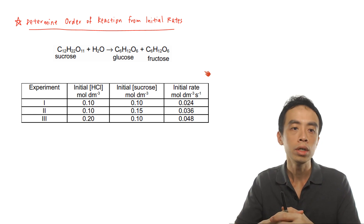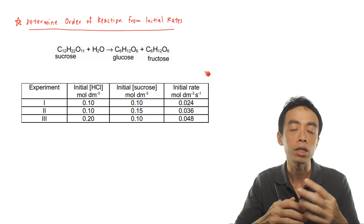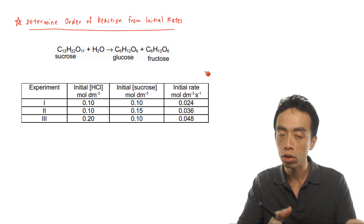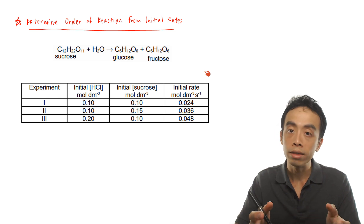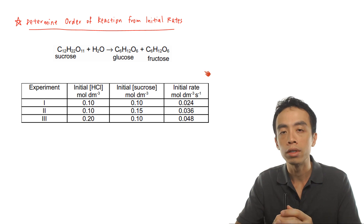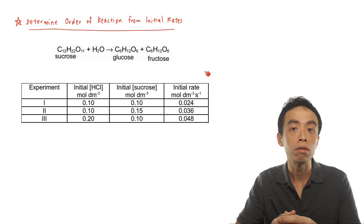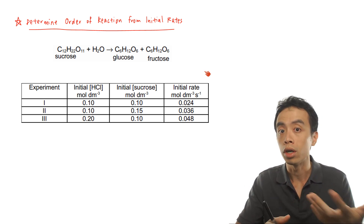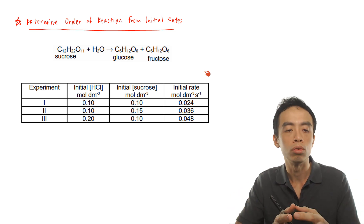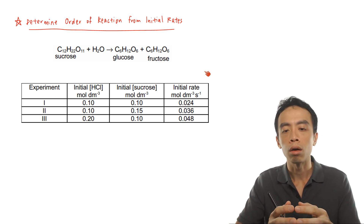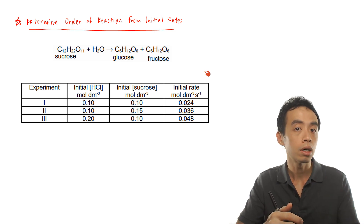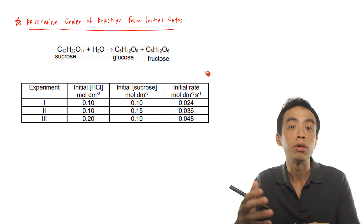What we need to do is choose a pair of experiments where only the concentration of one species changes, and ideally the other species concentration remains constant. Therefore, any change in the rate of the reaction must be because of the species whose concentration you are changing.